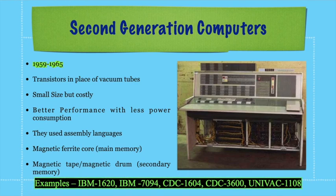Examples of second generation computers include IBM 1620, IBM 7094, CDC 3600, and UNIVAC 1108. IBM computers and UNIVAC 1108 are often asked in exam questions about second generation computers. So second generation computers were transistor-based, unlike the first generation which were vacuum tube-based.